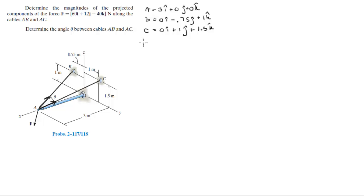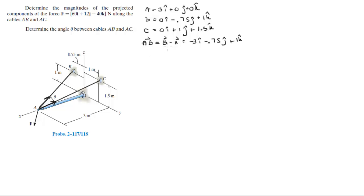We're going to start with the projection along AB. For that, we find the vector AB, which is the position vector B minus the position vector A. This is equal to −3i − 0.75j + 1k.